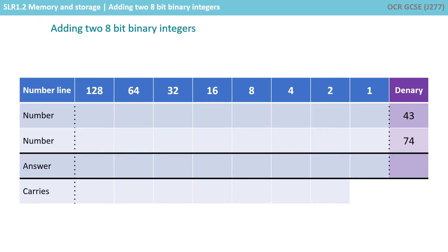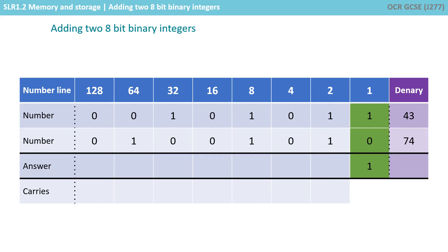Let's take a look at another example, this time 43 plus 74. I've written out the two binary numbers. Starting on the right: a 1 and a 0 is 1. A 1 and a 1 is 0 and we carry a 1 to the next column. It's important to show these carries in the exam — write them underneath.